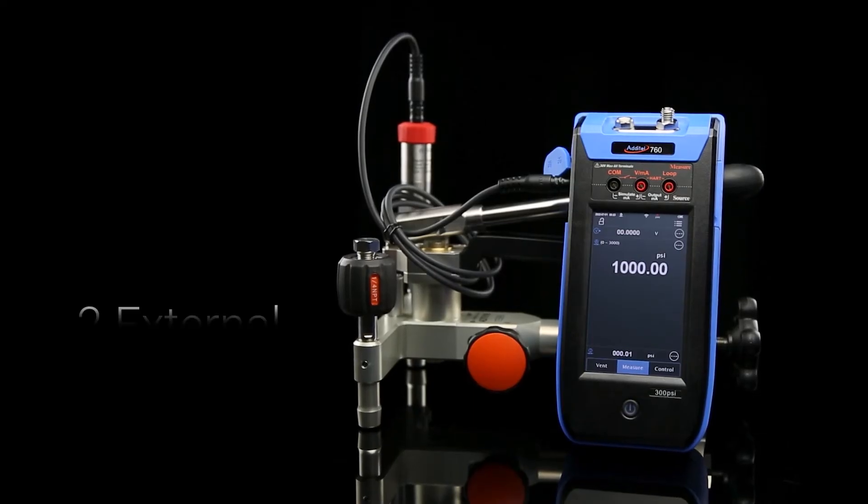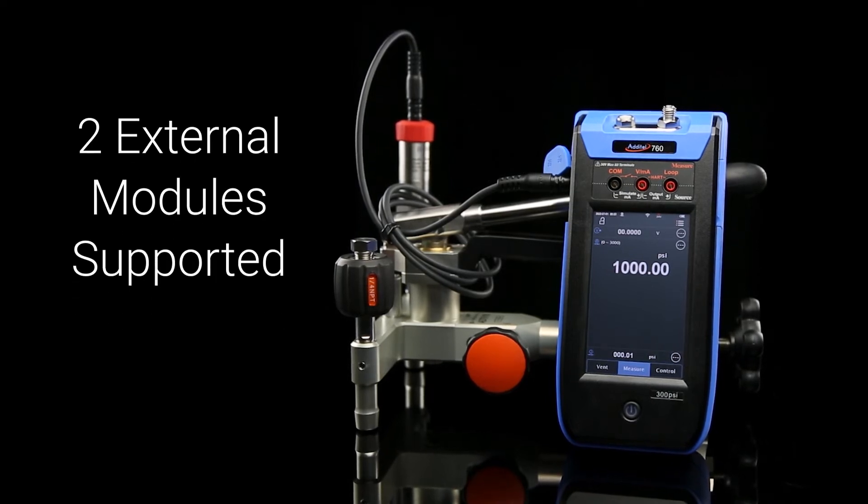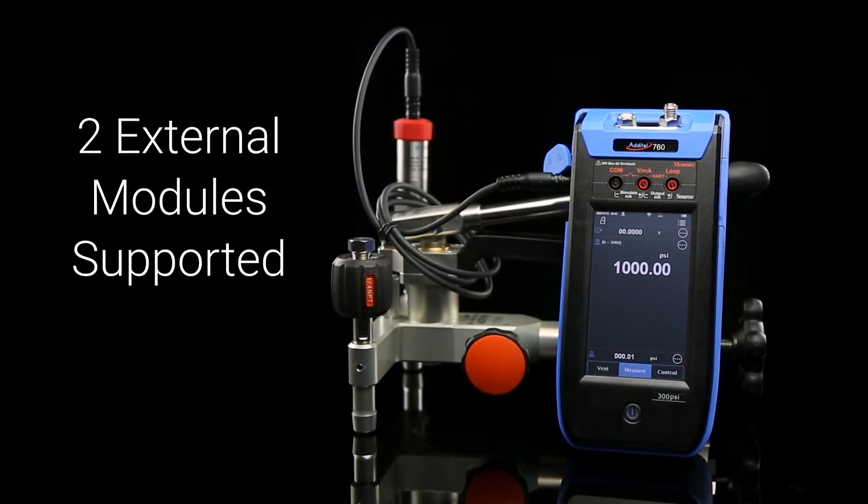If you need to work with higher pressures, the 760 can be connected to external pressure modules for readings up to 60,000 psi.